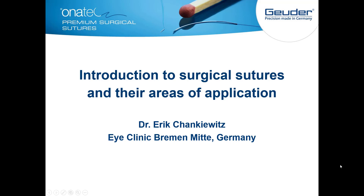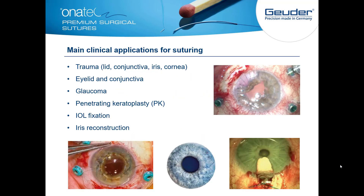There are plenty of useful applications for suture materials in ophthalmology in the daily clinical routine. The following list is a small excerpt from the most important indications and use scenarios. We use sutures in traumatology for lid, conjunctiva, iris, or cornea defects. Eyelid and conjunctiva sutures are also needed in oculoplasty, glaucoma surgery, penetrating keratoplasty, IOL fixation, and iris reconstruction.